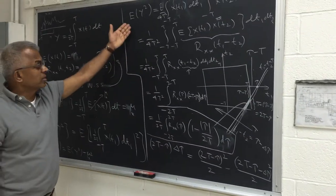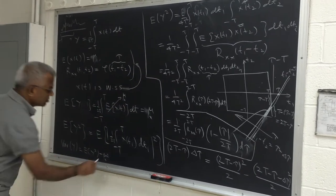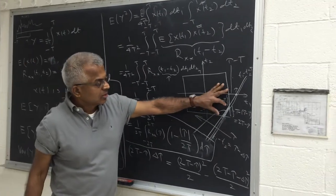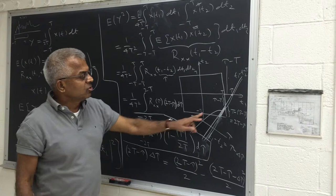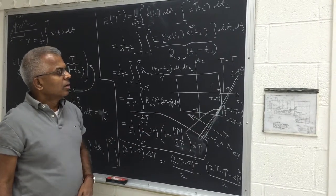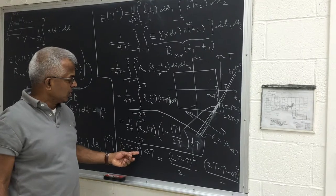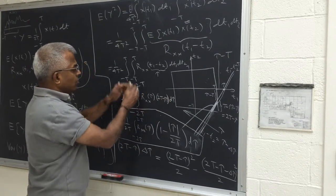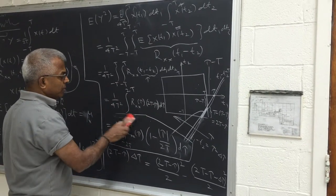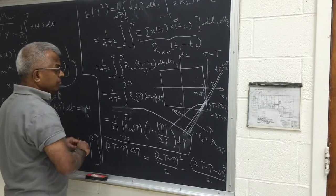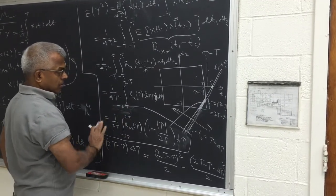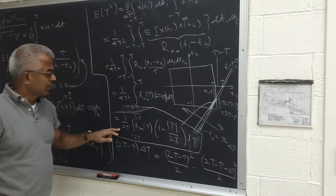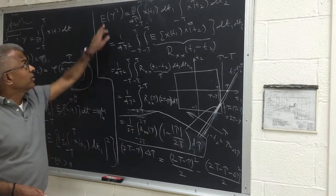So this is the expected value of y squared. Expected value of y squared minus the mean squared will give its variance. So the interesting thing is, this strip, this trapezoidal shape of area, is actually (2t minus |τ|) multiplied by dτ. So we multiply with that, do the integration from minus 2t to plus 2t. The integral of R_XX of τ multiplied by that area will give you the expected value of y squared.